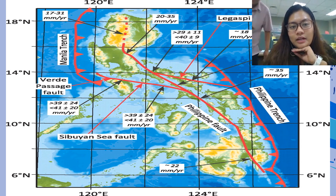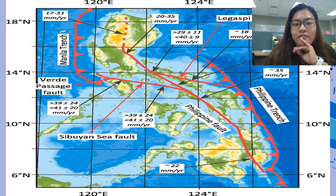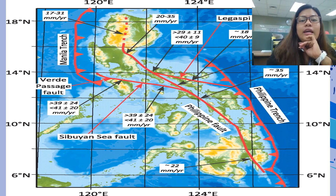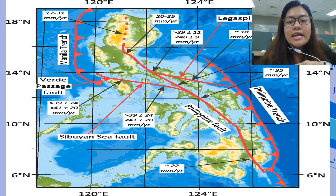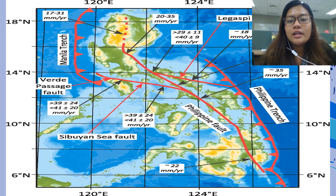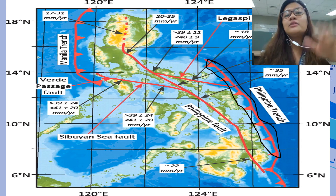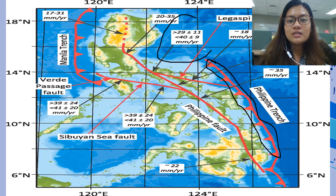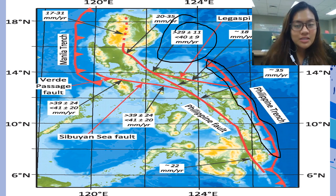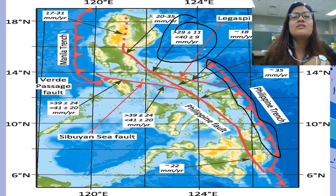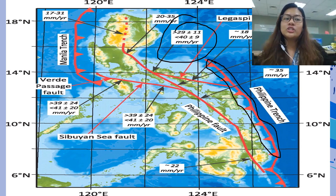I'm showing you the picture where the straight fault line is the active fault line and this one is the trenches of the Philippines. Throughout the plate tectonic movement, we actually have the Benham Rise — this is the place where Benham Rise is located, and it is actually larger and bigger than Luzon and rich in oil.